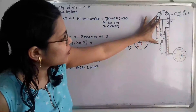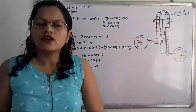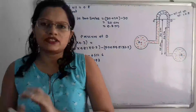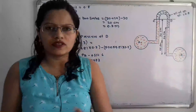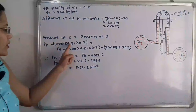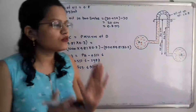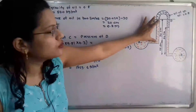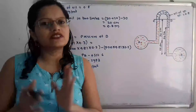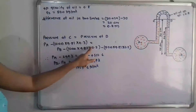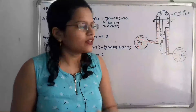From P_A we subtract the pressure due to the height of water in the left-hand side limb — that is due to this 30 cm height. This is defined as ρgh, where ρ is the density of water = 1000, g = 9.81, and h = 30 cm = 0.3 meters. Because the U-tube is inverted, we subtract this pressure: pressure below C = P_A − ρgh = P_A − (1000 × 9.81 × 0.3).